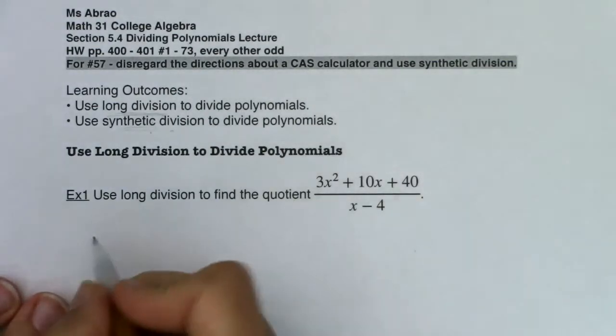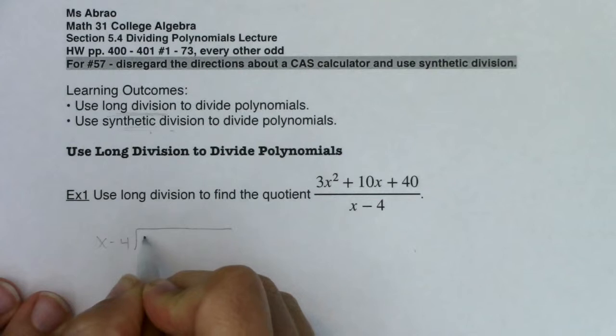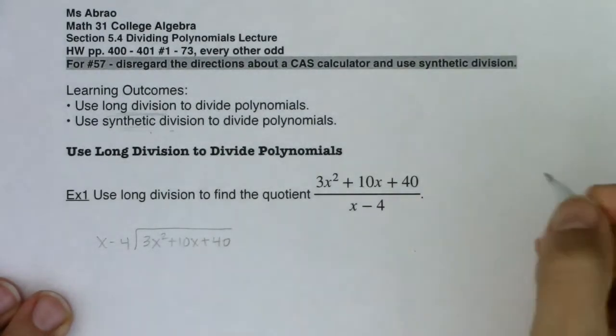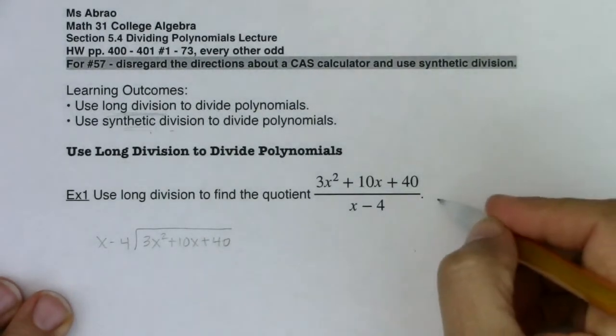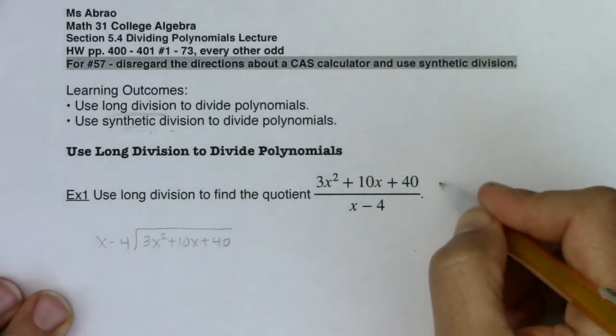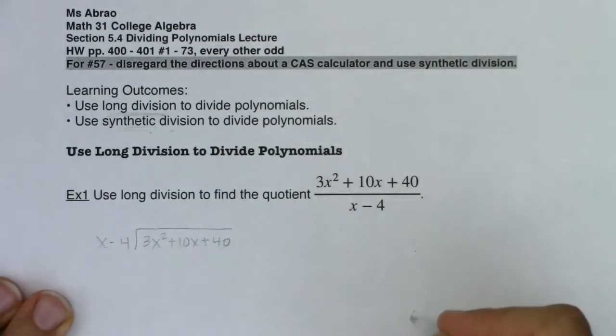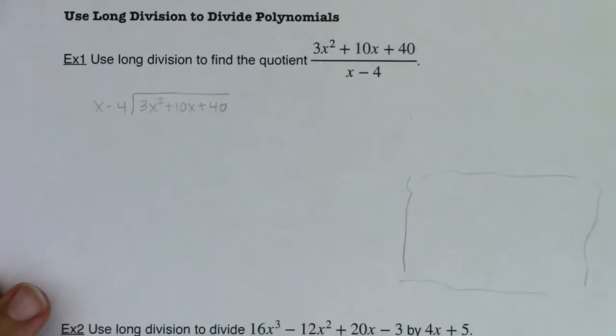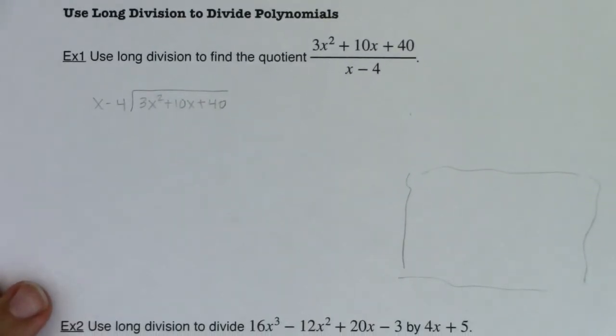So I want to use long division. So we'll go x minus 4, it needs to get divided into 3x squared plus 10x plus 40. Now if it's been a little while since you've done division the long way, let me just do a little bit over here. I'll put it off here so it's out of the way. Let me go ahead and scooch this up, just so we can get it all in view.